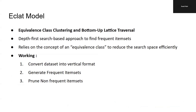The third model implemented is Eclat — short for Equivalence Class Clustering and Bottom-Up Lattice Traversal. The Eclat algorithm is a frequent item set mining technique used in machine learning and data mining to discover patterns in transactional datasets. It is particularly useful for market basket analysis, finding associations between items frequently bought together.